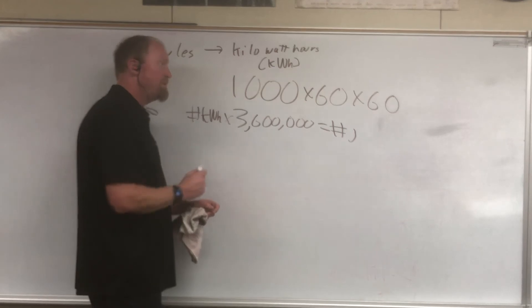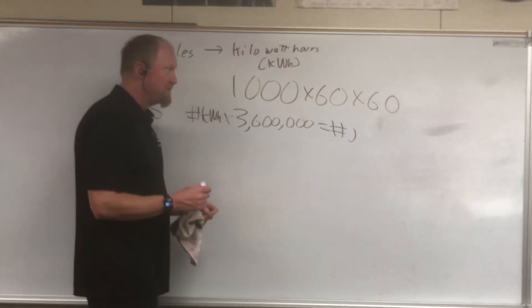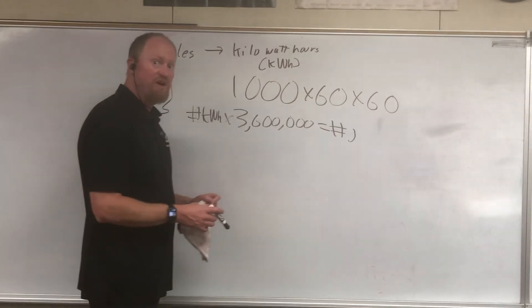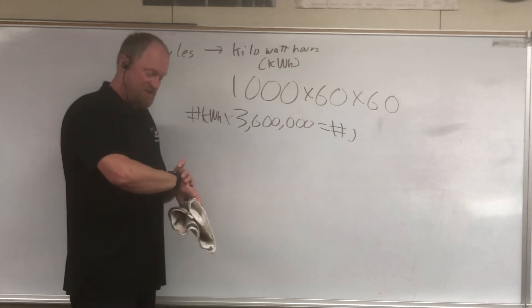Kilowatt hours to joules multiply by 3,600,000. If you want to take joules and turn them into kilowatt hours, simply take joules and divide it by 3,600,000. I hope this has been helpful and have a nice day.